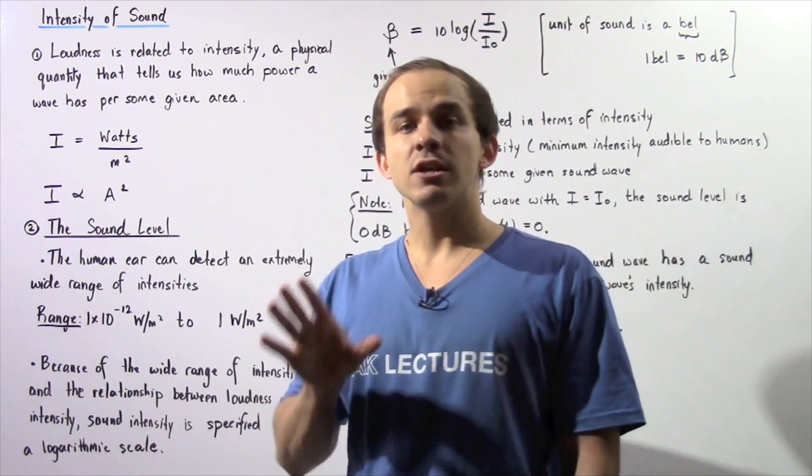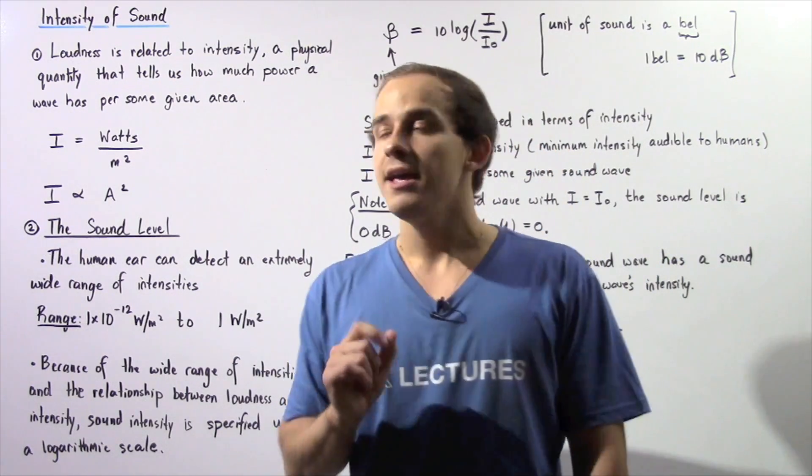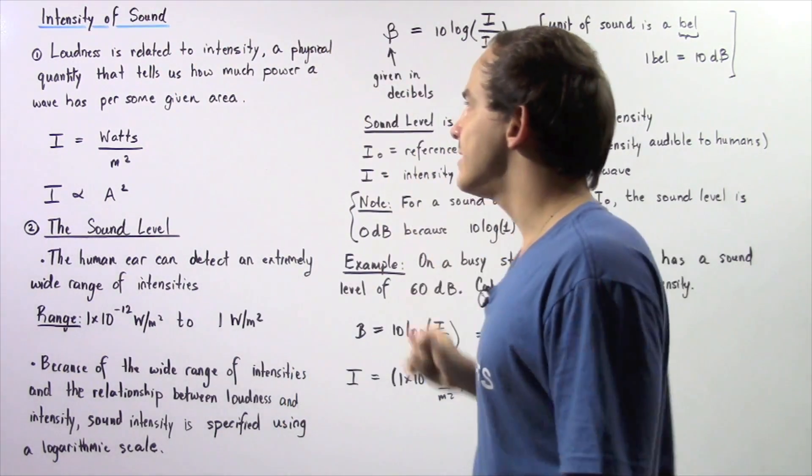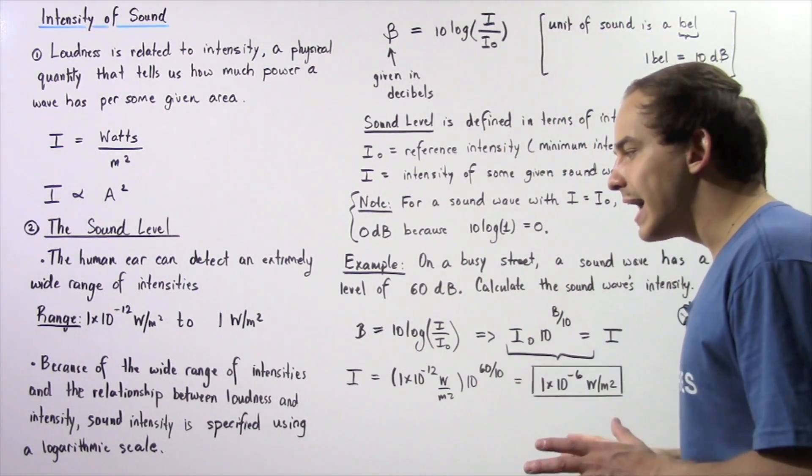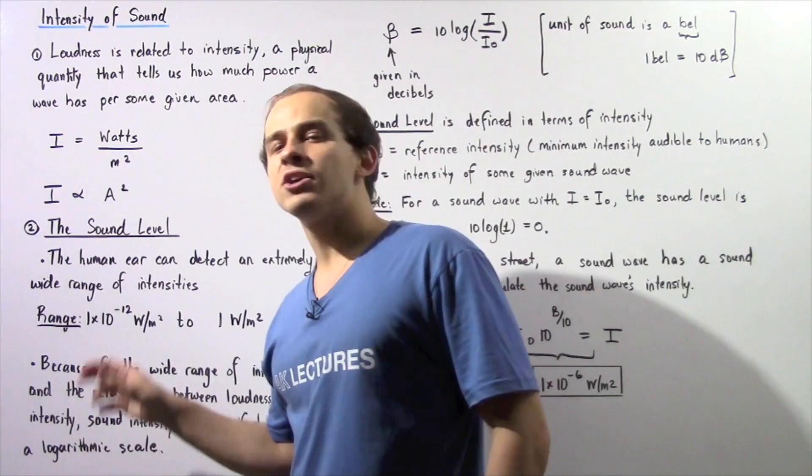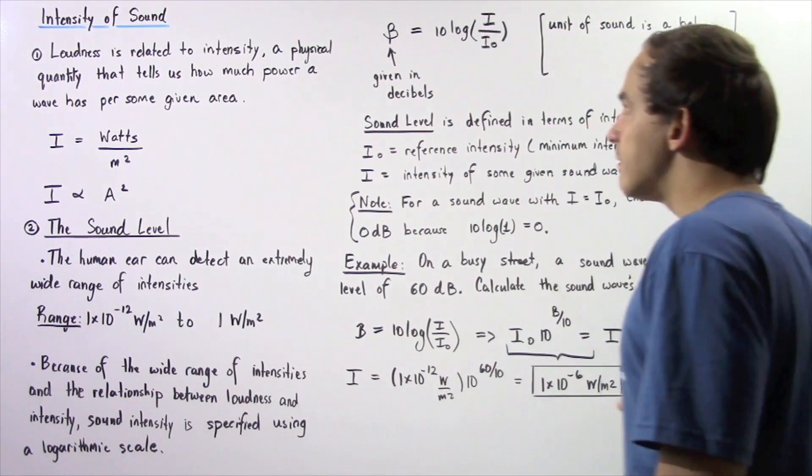Because of this extremely wide range of intensities of the human ear and because of the relationship between loudness and intensity, we define our sound intensity using a logarithmic scale, and this is known as the sound level.